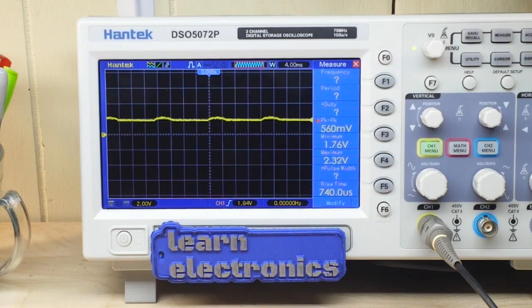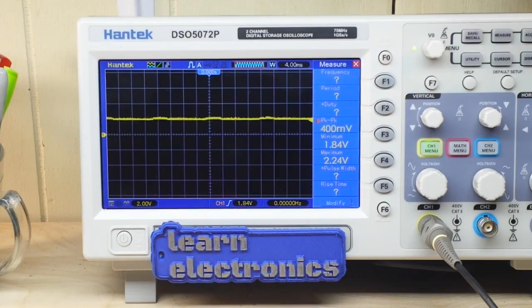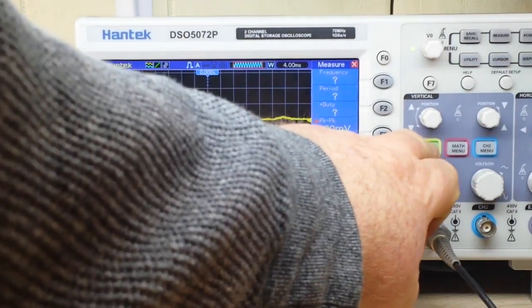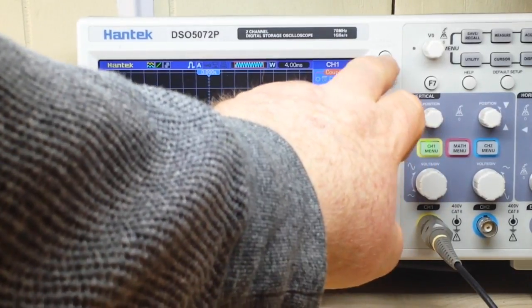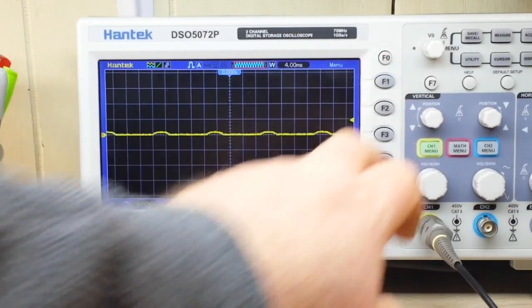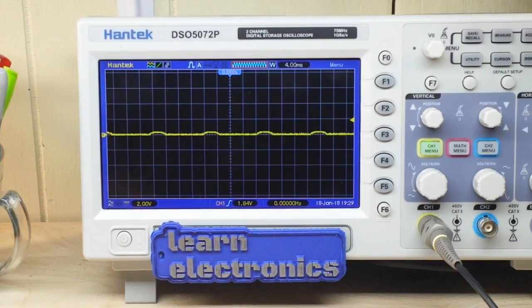And when we measure here we get an almost flat line. Okay so that doesn't give us very much information, it's just telling us we have for all intents and purposes a DC voltage. But what happens if we AC couple that circuit now?